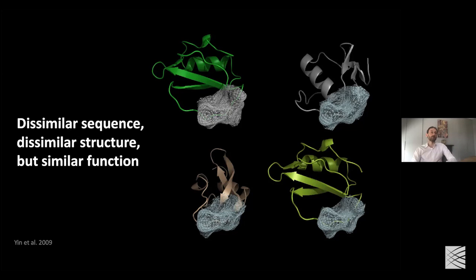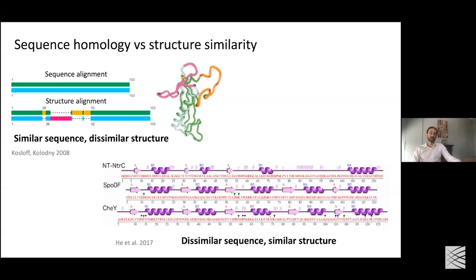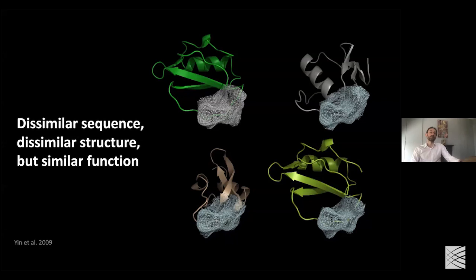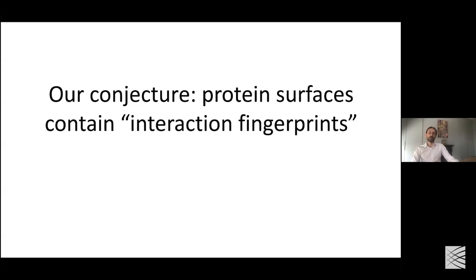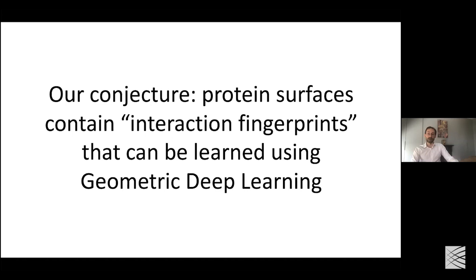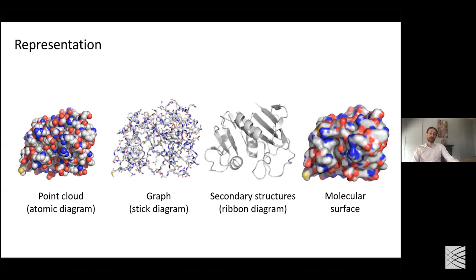Basically, we may have proteins with similar sequence and similar structure but different function. This is especially the case for de novo designed proteins that do not have any evolutionary history — proteins engineered in the lab that have never been created in nature, so you don't have conserved regions and don't know how they relate to other proteins. Our conjecture is that protein surfaces contain information that we call interaction fingerprints, which we can extract and learn using geometric deep learning. These interaction fingerprints allow us to predict whether two proteins will bind. There are many ways of representing proteins: as point clouds in an atomic diagram, as graphs in a stick diagram, or as secondary structure ribbons. Here, we model proteins as molecular surfaces.